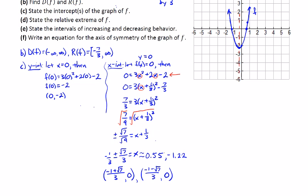Then let's move on to part D. Part D is going to ask us to look at the relative extrema. There is one relative extrema. In this case, it is a relative minimum, and that is located at the vertex, which is negative 1/3, negative 7/3. And the relative maximum doesn't exist. There is none.